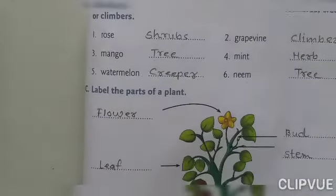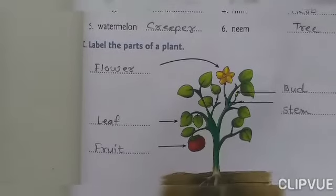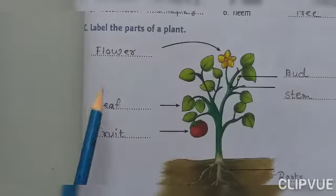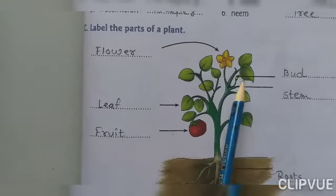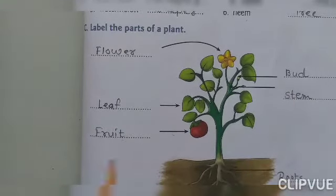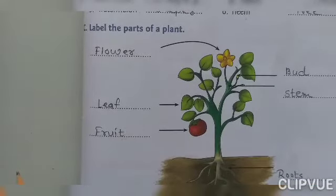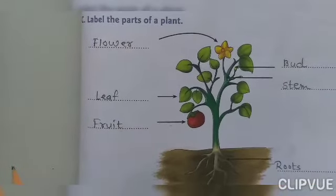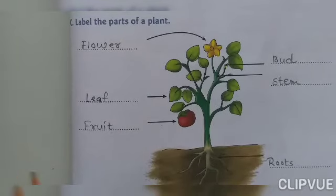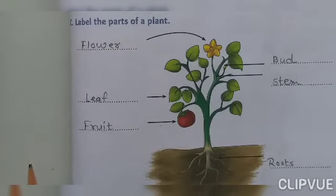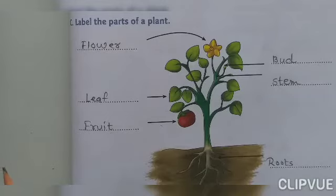Now, label the parts of a plant: flower, leaf, fruit, stem, and roots. You may find the parts of a plant in your textbook — write them down in your notebook. All students will draw the plant in your notebook and color it. Thank you.